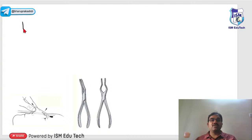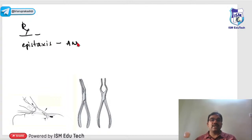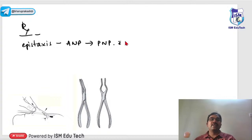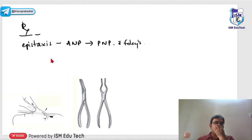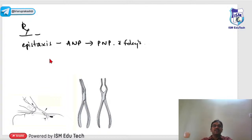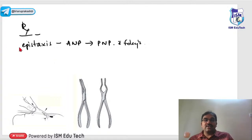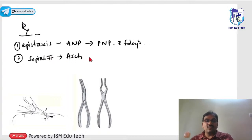Treatment for septal fractures: if there is uncontrollable epistaxis, first go for anterior nasal packing. If that is not adequate, go for posterior nasal packing with Foley's catheter. If bleeding is still not controlled, go for cauterization of bleeding points, then sphenopalatine artery ligation, and if still not stopping, external carotid artery ligation.